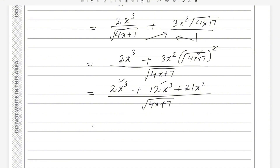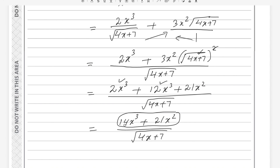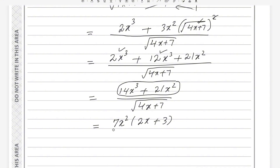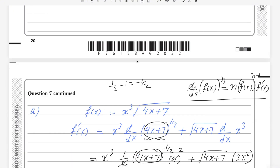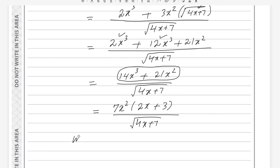Combining like terms: 12x³ + 2x³ = 14x³, giving (14x³ + 21x²) divided by the square root of (4x + 7). Factorizing the numerator: 7 and x² are both common, so we factor out 7x², leaving 7x²(2x + 3) divided by the square root of (4x + 7). This matches the required form, so k equals 7.